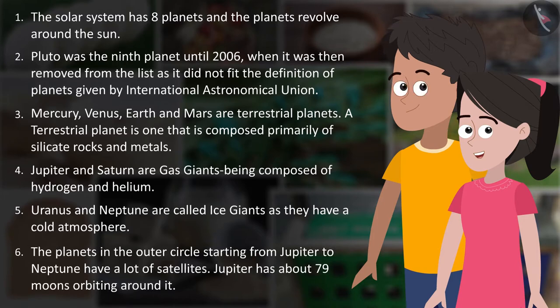The planets in the outer circle starting from Jupiter to Neptune have a lot of satellites. Jupiter has about 79 moons orbiting around it.